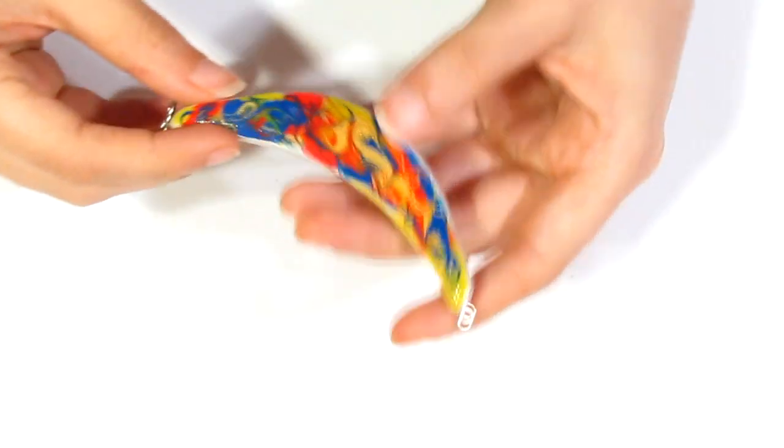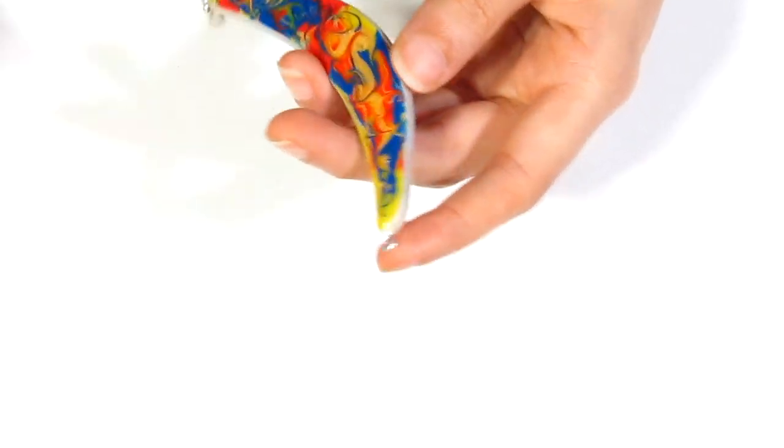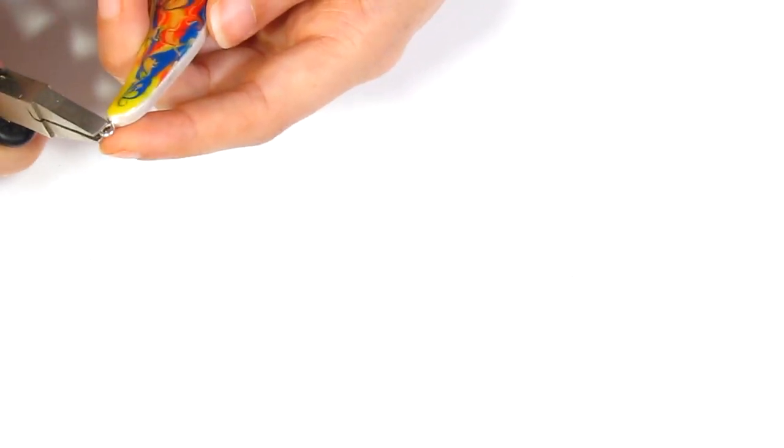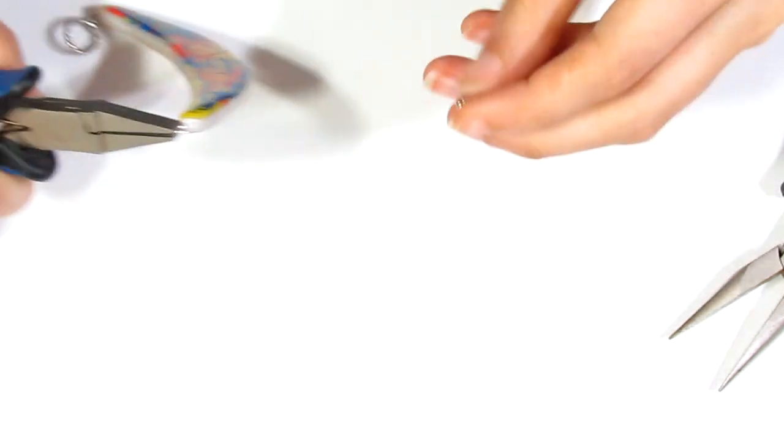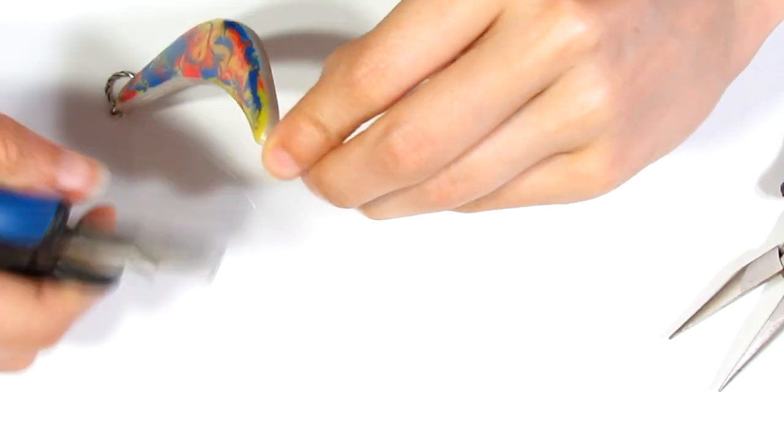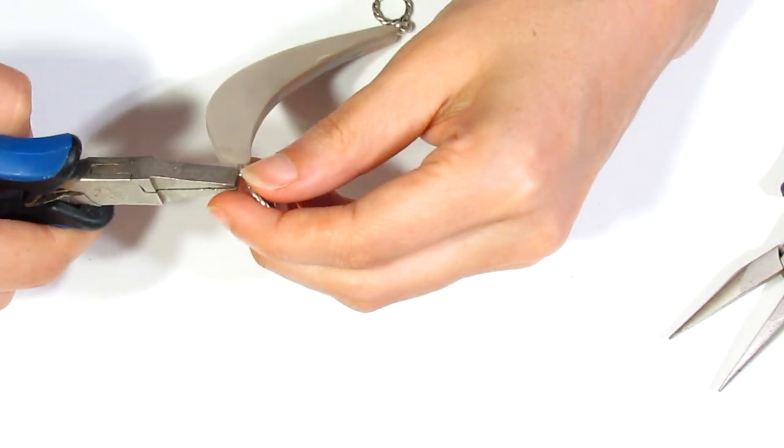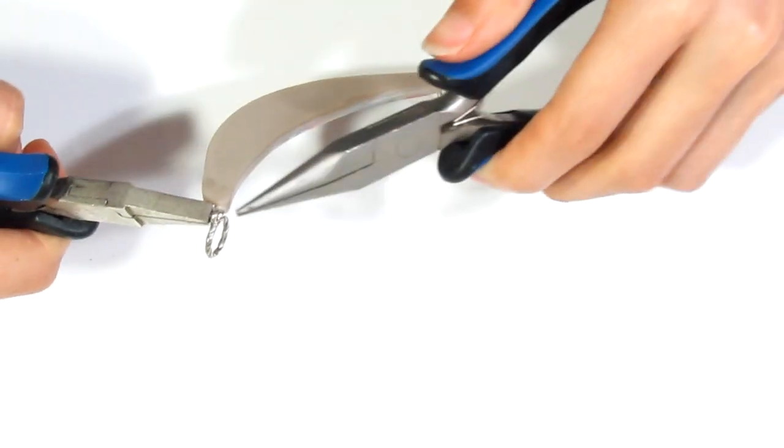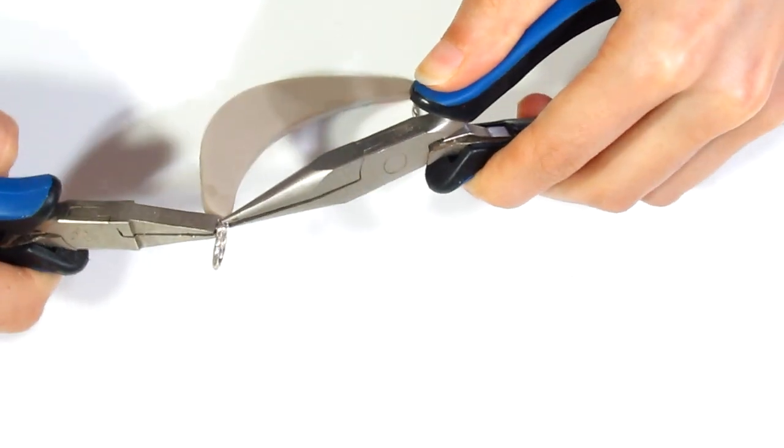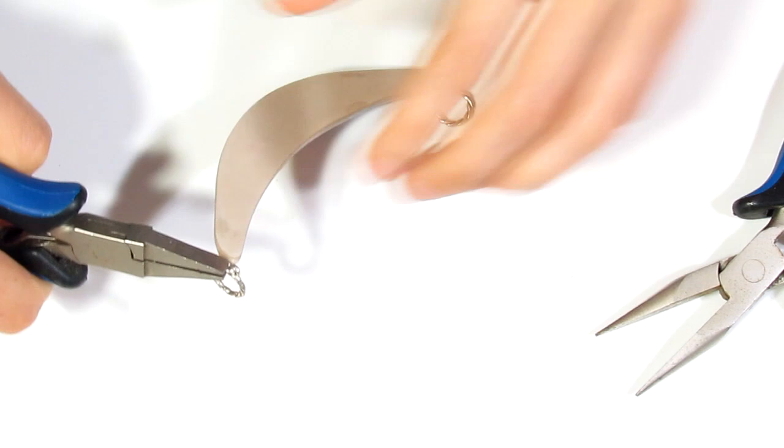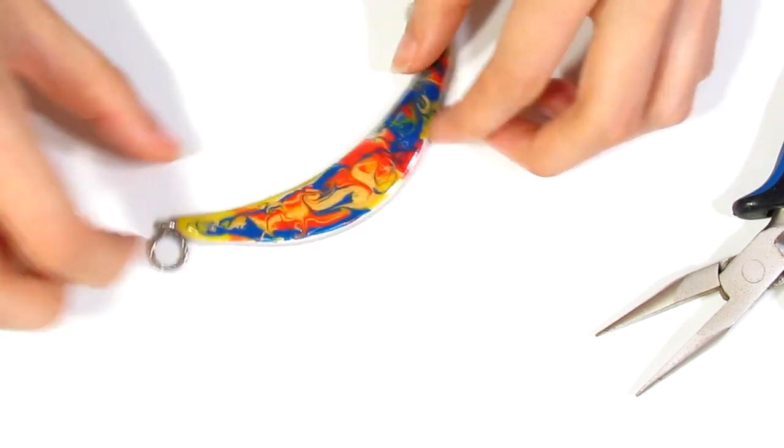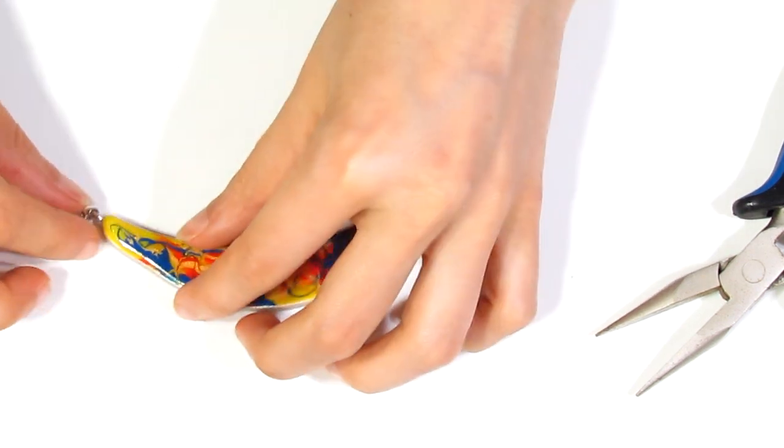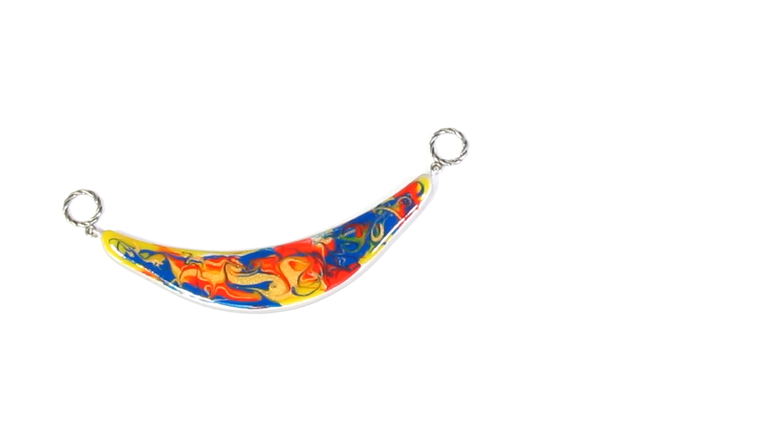Now we are going to attach one half of a toggle clasp on each end. So I'm just going to grab the eye pin like so and I'm going to open that up, bring over the clasp, slide that on, and then we are going to close that up again like so. And then just twist that eye pin a little bit so the toggle clasp lays flat.